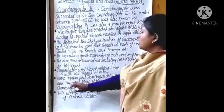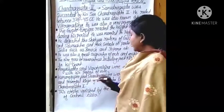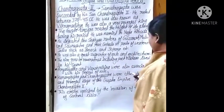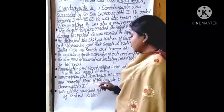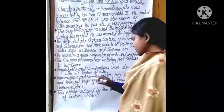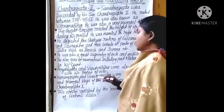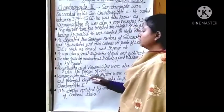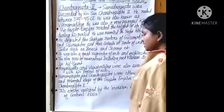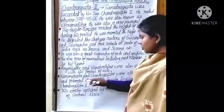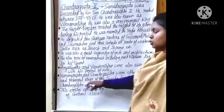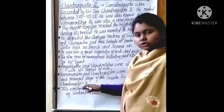Kumaragupta and Skandagupta were other famous and powerful kings of the Gupta dynasty. After Chandragupta 2, Kumaragupta and Skandagupta came to power.